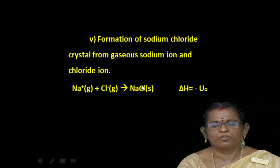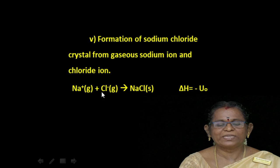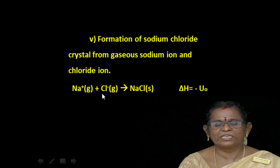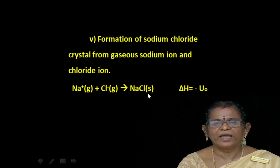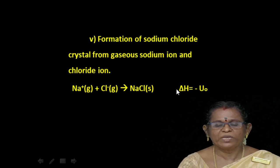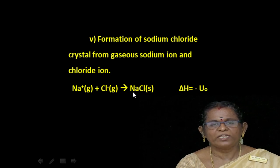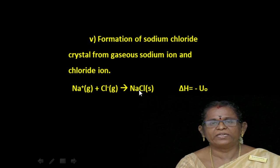Fifth step: formation of sodium chloride crystal from gaseous sodium ion and chloride ion. Na⁺ (gaseous) + Cl⁻ (gaseous) → NaCl (solid). ΔH = −U₀. The formation of sodium chloride crystal is an exothermic process, so the value obtained is taken as a negative quantity.